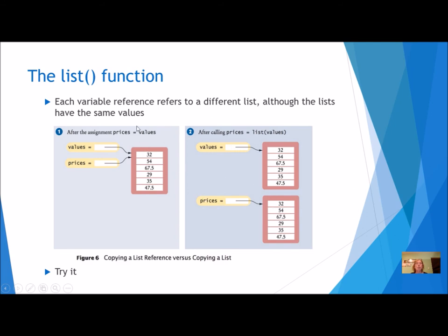So if I don't use the list function, I have two variables that refer to the same list. If I do use the list function, then I have two lists and each one has its own identifier or reference. We're going to practice that today.